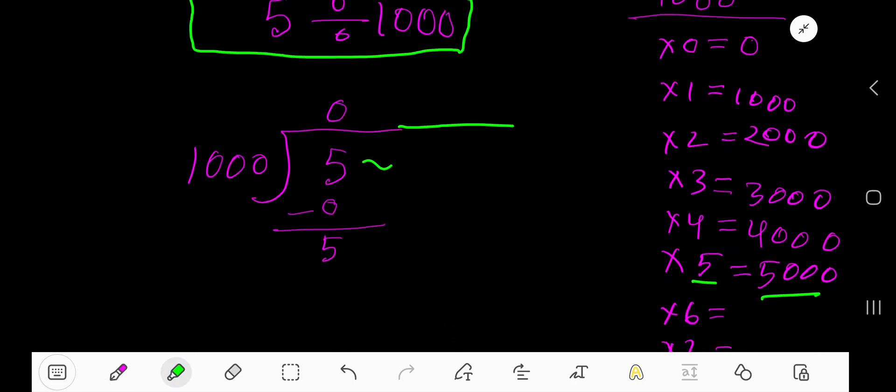To continue this process, you can add a decimal and take any number of zeros. Bring down the first 0, so you get 50. But before this 0 there is a decimal. The decimal must come directly to the quotient.